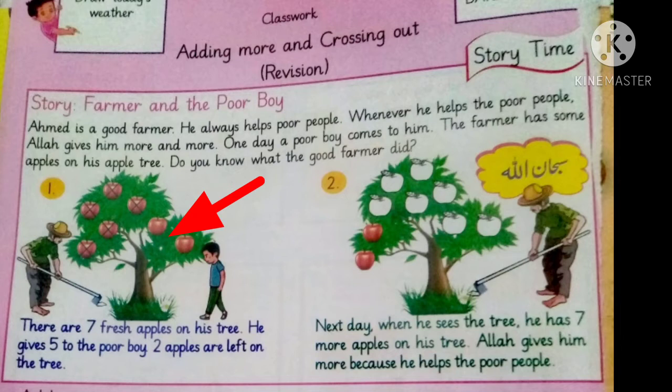He was having 1, 2, 3, 4, 5, 6, 7 apples. When the farmer gave 5 apples to the poor boy, look at the second picture. How many are left? Yes, now Ahmed is having only 2 apples in the tree. Then, do you know what happened?